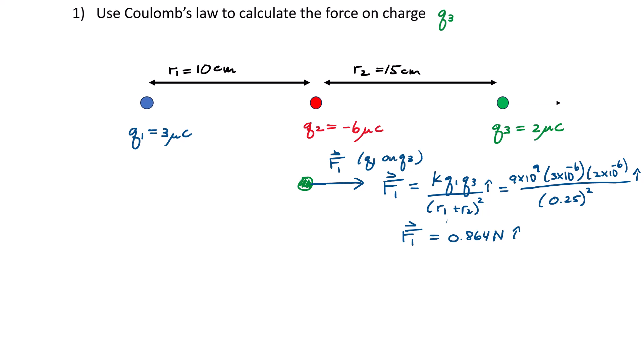Next I want to calculate another force: Q3 is also interacting with charge Q2. Since Q2 is negative and Q3 is positive, Q3 is attracted to Q2, so the force points toward Q2 — I'll label that F2, the force of Q2 on Q3. Note there are also interactions between Q1 and Q2, but we're only looking at forces on Q3. For F2, the magnitude is K times the magnitude of Q2.